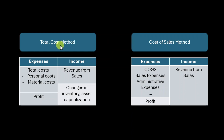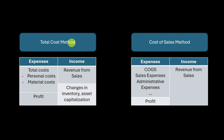Let's look at the total cost method first. The total cost method is structured based on different accounts. On the expense side, we have different costs — our total costs — and we subtract personnel costs and material costs. On the income side, we have our revenue from sales activities, changes in our inventory, and also asset capitalization. What remains in the end is the profit. This method is utilized in certain countries where local generally accepted accounting principles allow it — for instance, if we account using IFRS.